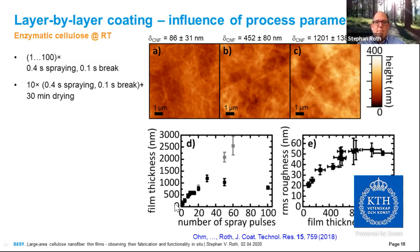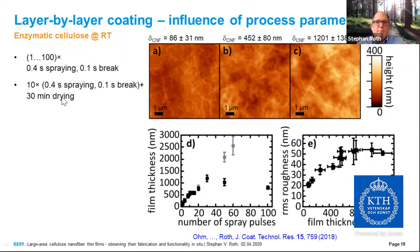With the number of spray pulses on the x-axis and film thickness on the y-axis, the black points show the first procedure: we are limited to around one micron film thickness, because spraying onto an already-liquid surface means the next spray pulse drives away the liquid and the film thickness even decreases. However, using the second procedure with 30-minute drying between spray procedures (light gray), we see a linear growth of film thickness with number of spray pulses. Simultaneously, the root mean square roughness levels off at around 50 nanometers, starting from about 20 nanometers.